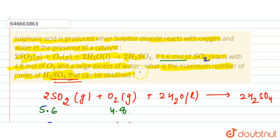It means that here if we take 5.6 moles of SO2 and 4.8 moles of O2 and excess water, the maximum number of moles of H2SO4 will be 5.6 moles, and that is our answer. Thank you.